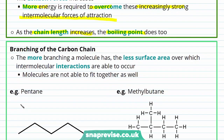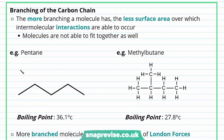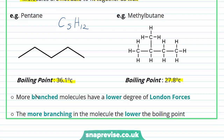Another factor that's important in influencing the boiling point of our alkanes is the branching of the carbon chain. The more branching a molecule has, the less surface area over which intermolecular interactions are able to occur — essentially the molecules are not able to fit together as well. If we compare two alkanes which have the same molecular formula: both pentane and methylbutane have a molecular formula of C5H12. Pentane is a straight chain alkane whereas methylbutane is branched. Pentane has a boiling point of 36.1 degrees Celsius, whereas the branched methylbutane has a boiling point of 27.8 degrees Celsius. The more branching in the molecule, the lower the boiling point.